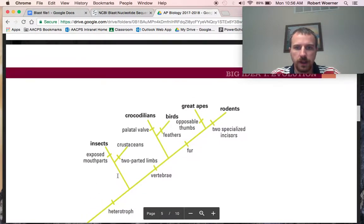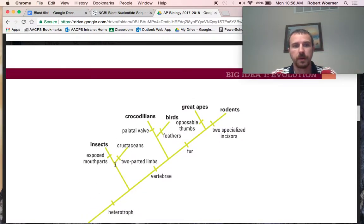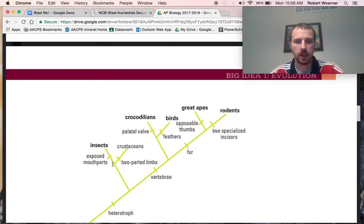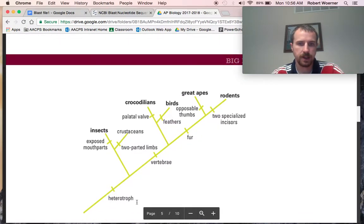So, here is our cladogram that we're going to use. We see that a heterotroph means it eats other creatures. And so, we have insects, crustaceans, crocodilians, birds, apes, rodents, and each place has its separation.